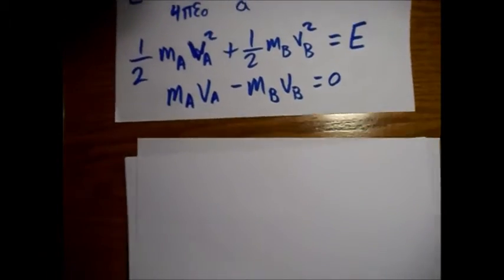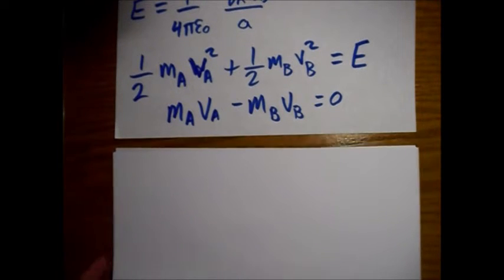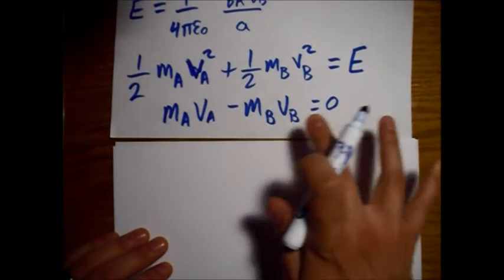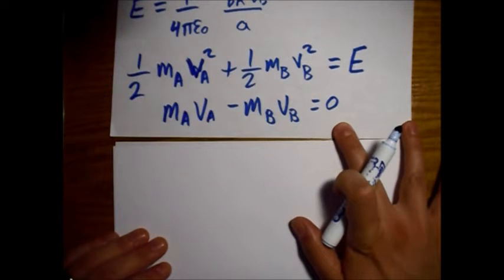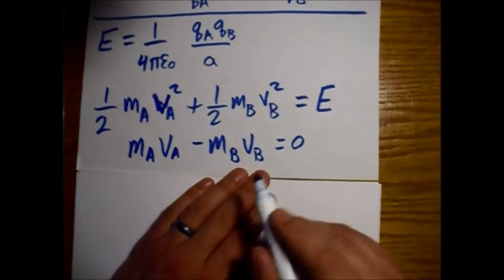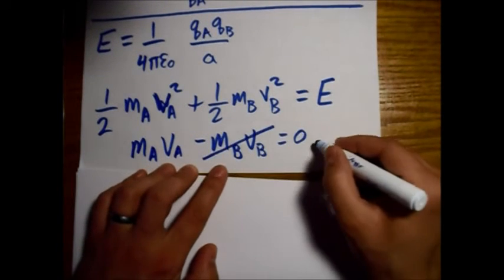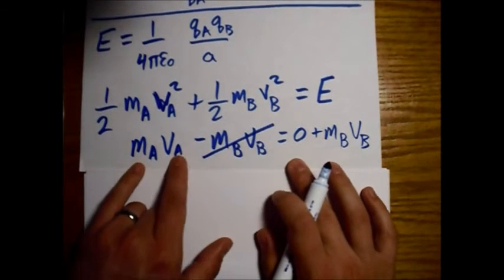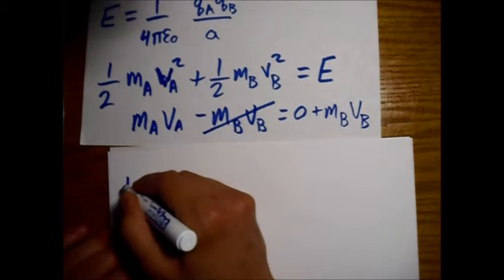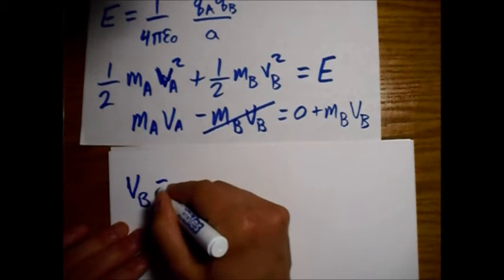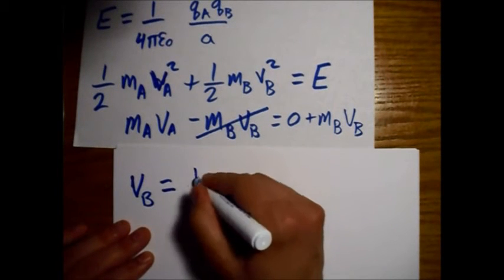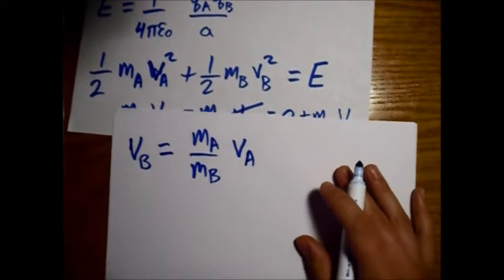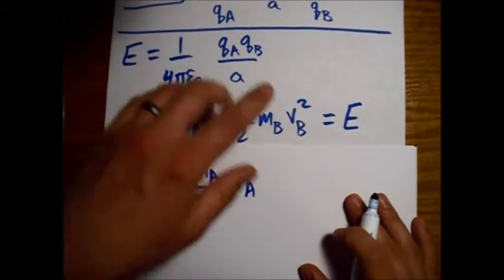Let's solve for V_B. Bringing the term over to the other side: M_A V_A equals M_B V_B. Dividing both sides by M_B gives V_B equals (M_A / M_B) times V_A. Now we're going to plug this into the conservation of energy equation.